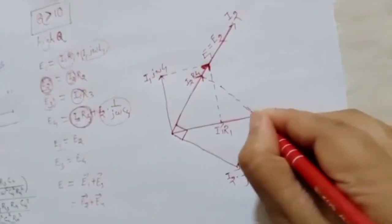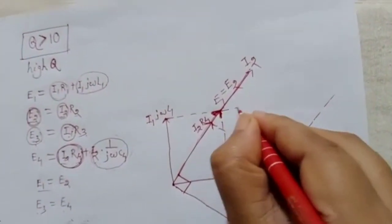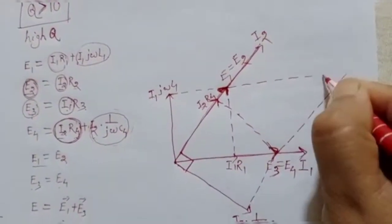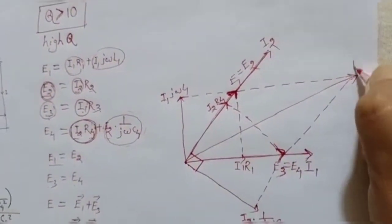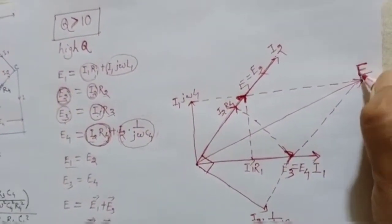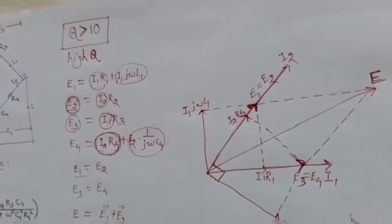Now we have E1, E2, E3, and E4. The total circuit voltage E is obtained by the phasor sum of E1 and E3, or equivalently E2 and E4. This completes the phasor diagram of Hayes bridge. In the next video, I will discuss Anderson's bridge and other AC bridges. If you liked this video, give it a thumbs up, subscribe to the channel, and share your feedback in the comments.